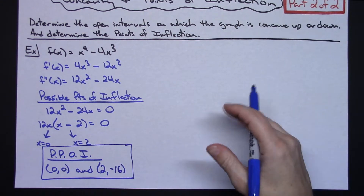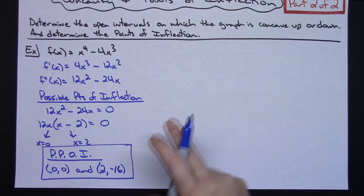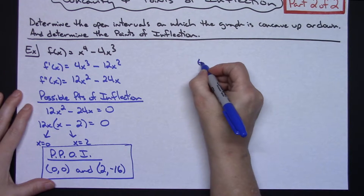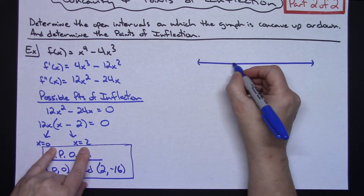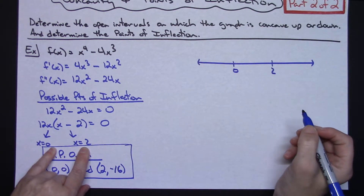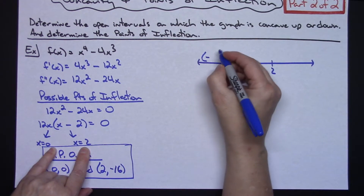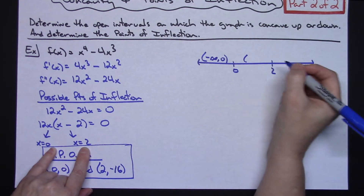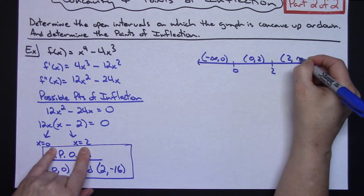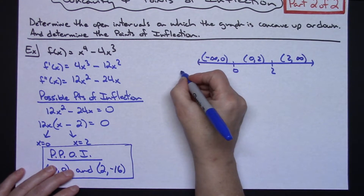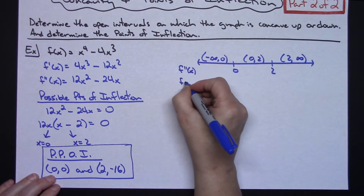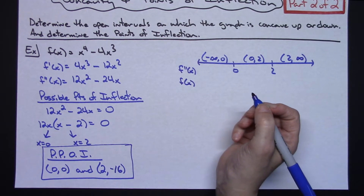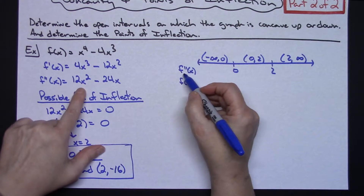Now I'll determine concavity using a number line. I draw a number line and place the two possible points of inflection on it: zero and two. This gives us three intervals: negative infinity to zero, zero to two, and two to infinity. I'll examine the second derivative on each interval to determine whether it's positive or negative, which will tell me the concavity of the original function.